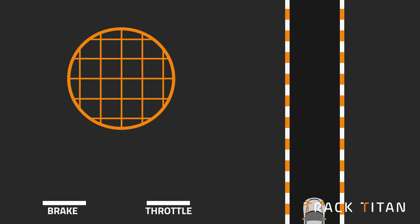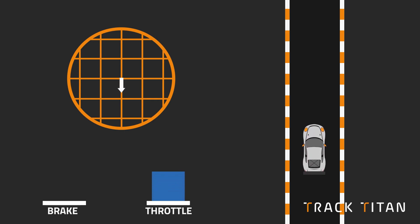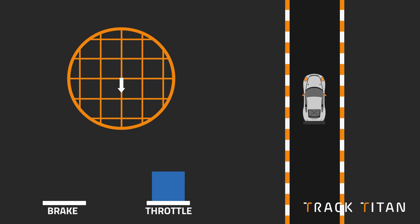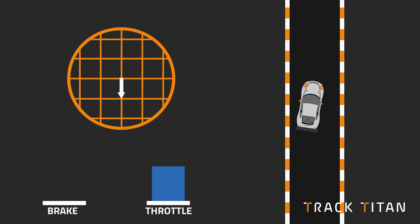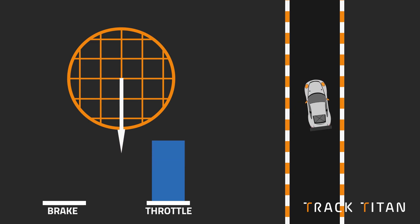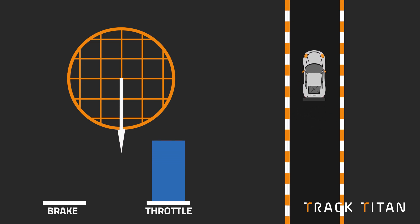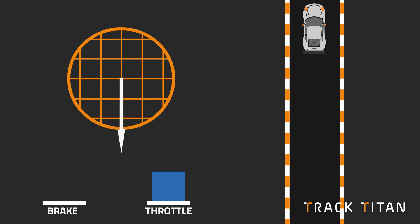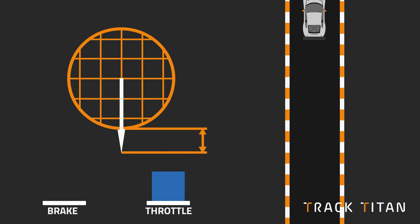The same principle can be applied to accelerating, just the other way around. So let's say the car is standing still — we're accelerating gently, you can see the arrow moving down just about, but we're nowhere near the grip limit. However, if we then put our foot down in a high-powered car, we're going to break traction, and breaking traction simply means in visual terms going beyond the confines of the friction circle.